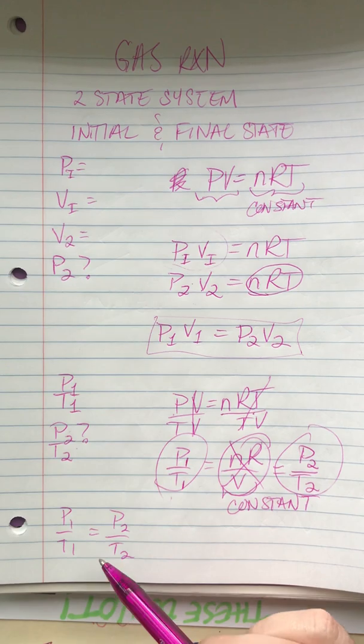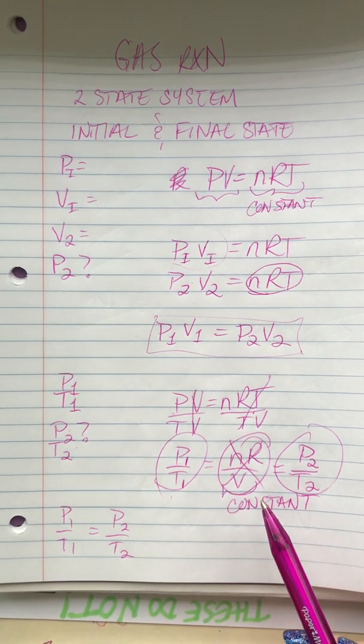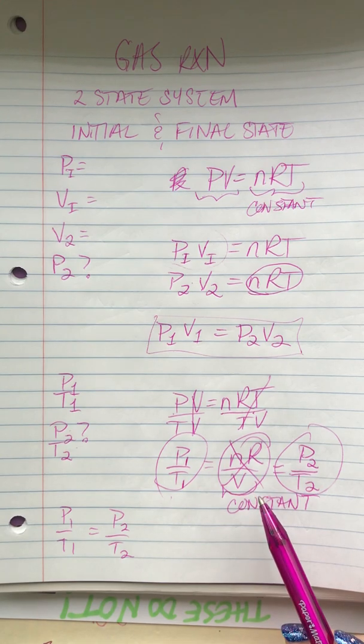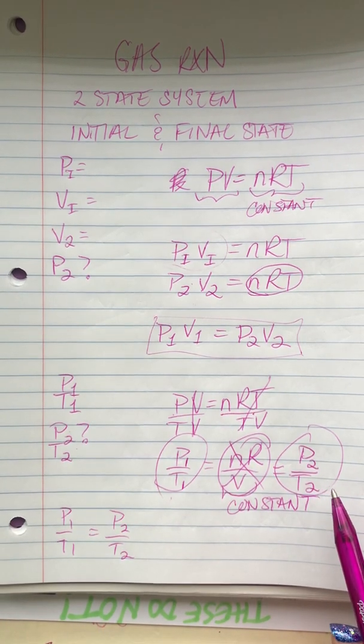This is, to me, a fail-safe. Because you only have to know PV equals nRT, and then you can always just derive the relationship between the variables that are changing. Does that make sense?